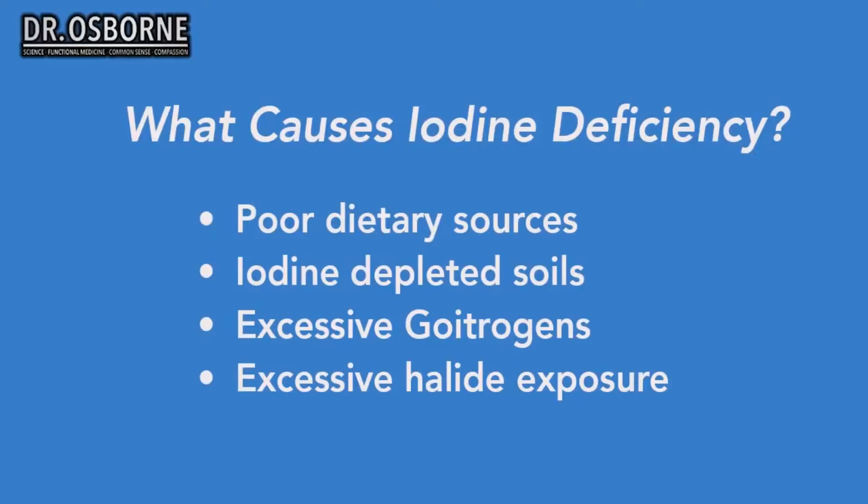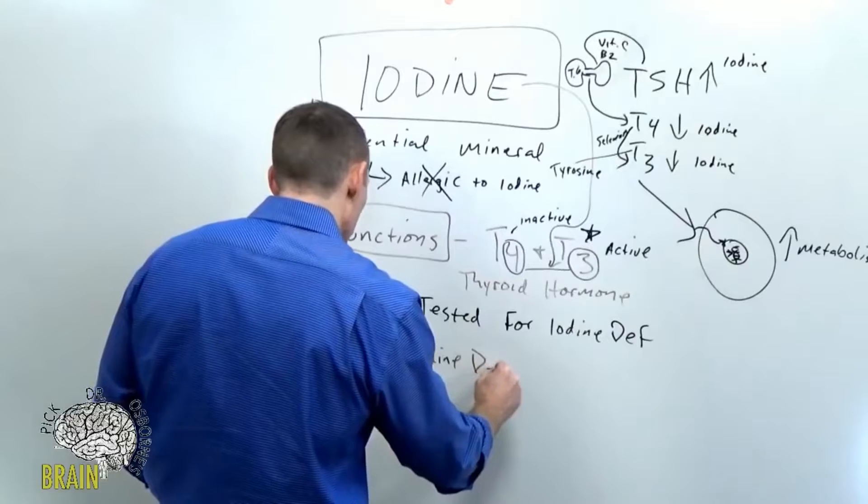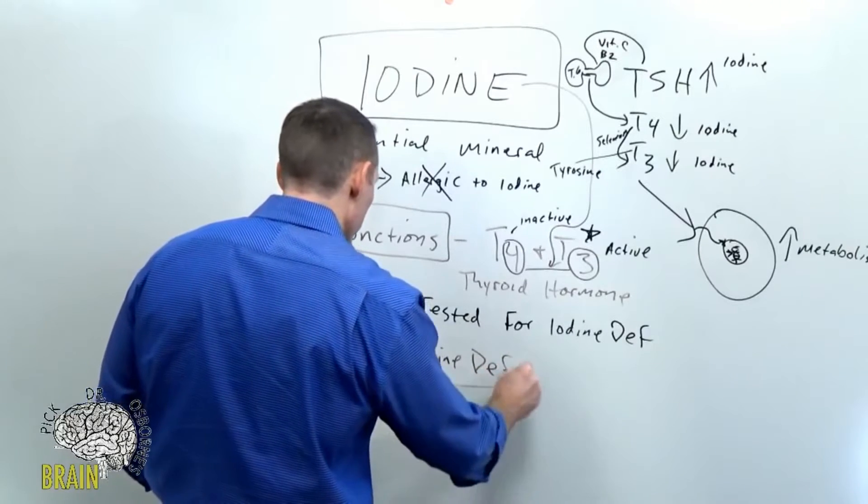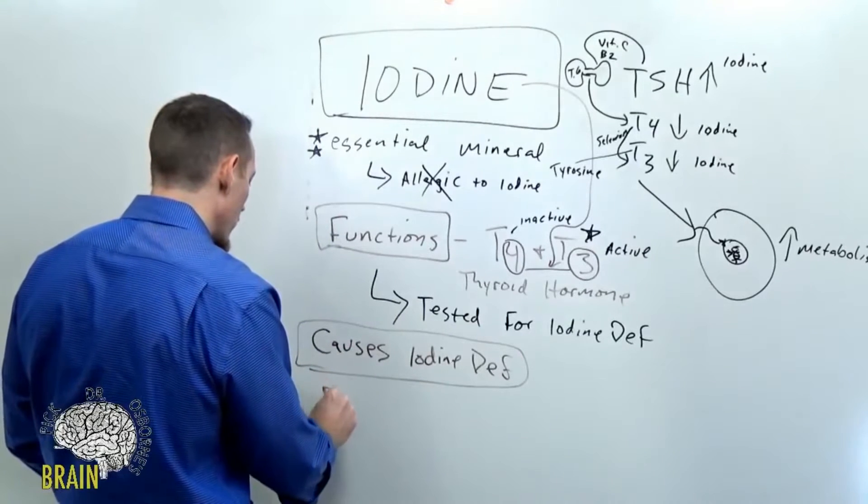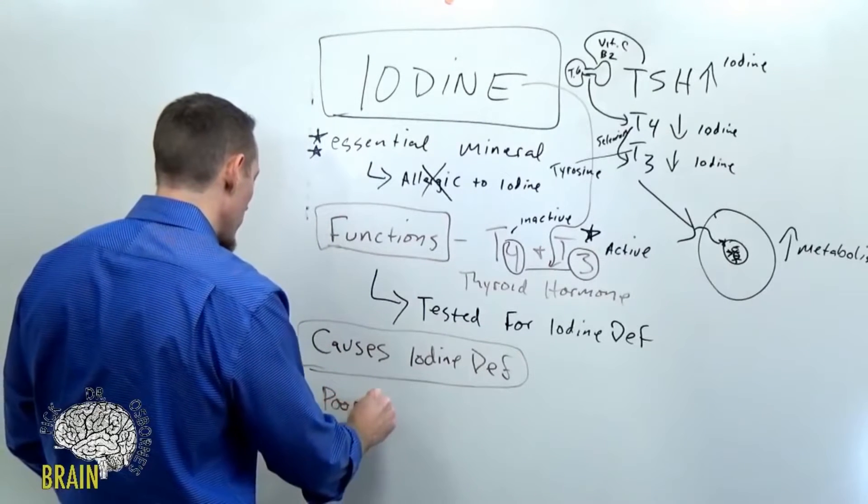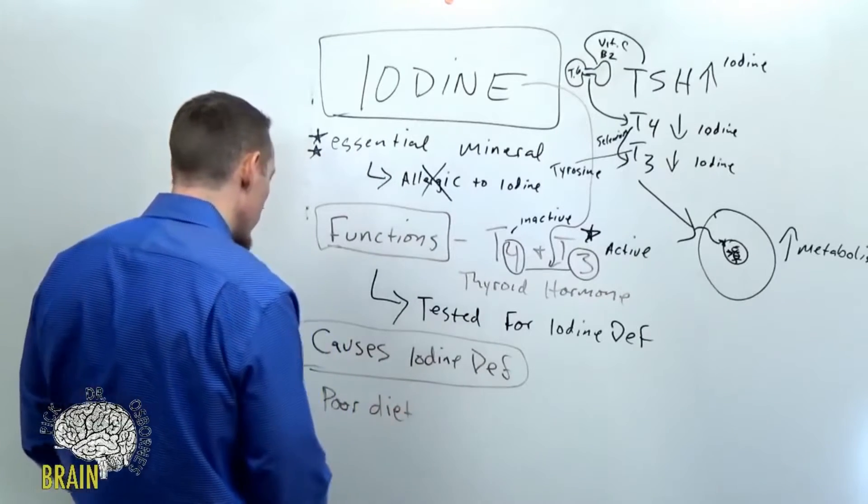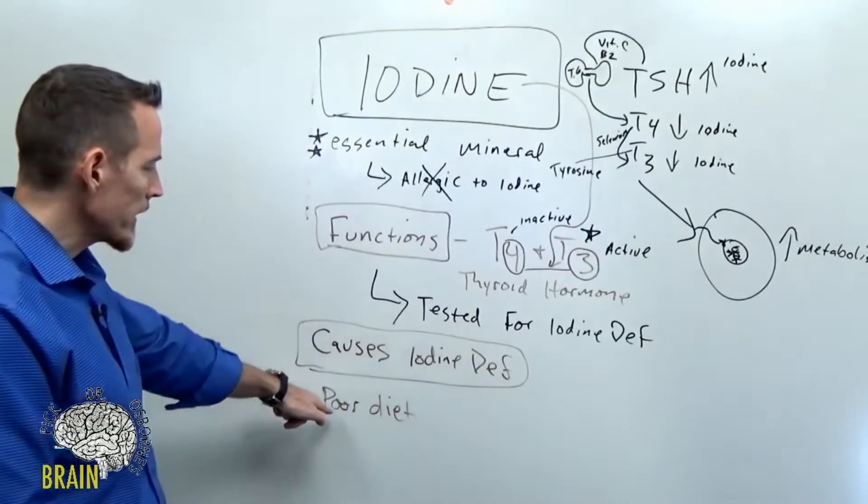Let's scroll down. I want to talk next about what causes iodine deficiency. For most people, the cause of iodine deficiency has to do with poor diet. We really look at the food sources of iodine, so poor diet, what does that really mean? Poor diet means not getting adequate foods that contain iodine. Okay, highly processed foods.